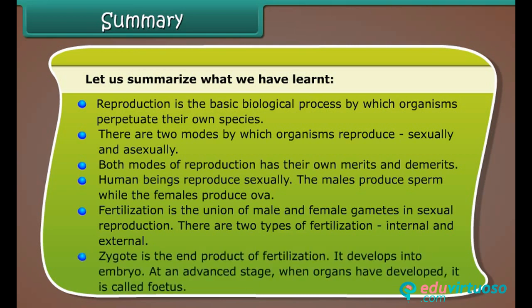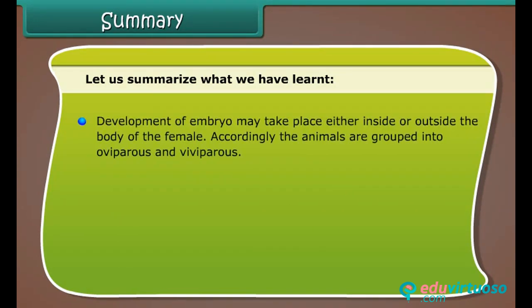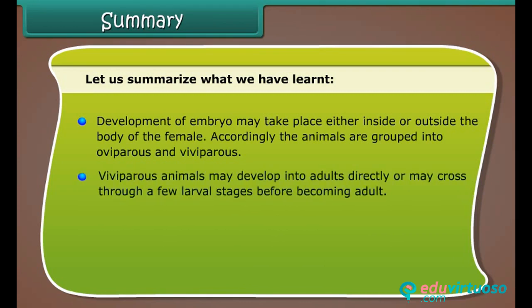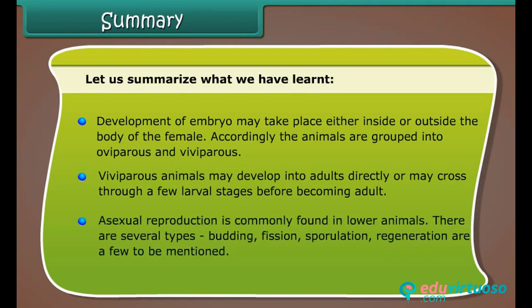The zygote is the end product of fertilization. It develops into an embryo, and at an advanced stage when organs have developed it is called a fetus. Development of the embryo may take place either inside or outside the body of the female. Accordingly, animals are grouped into oviparous and viviparous. Viviparous animals may develop into adults directly or may pass through larval stages before becoming adult. Asexual reproduction is commonly found in lower animals; several types include budding, fission, sporulation, and regeneration.